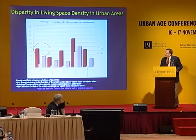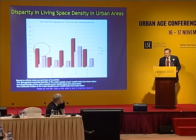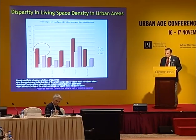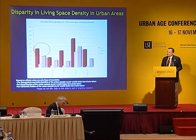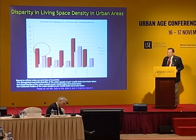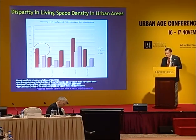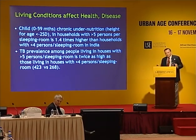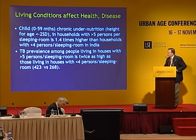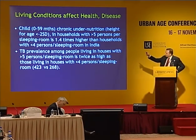This is another form of disparity in living space. We tried to assess more than five persons per sleeping room, an indicator available for many countries in the demographic health surveys. We found that in the lowest quartile in India, nearly 50% of families had more than five persons per sleeping room. Further analysis found that chronic undernutrition among children under five in households with more than five persons per sleeping room is 1.4 times higher than in households with less than four persons per sleeping room, and if we were to use three persons, it would be twice as high.